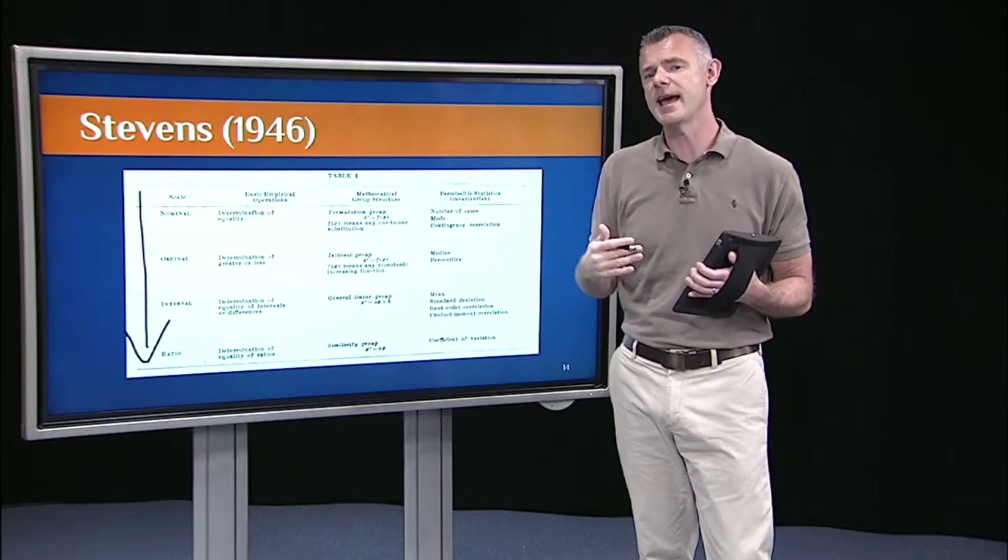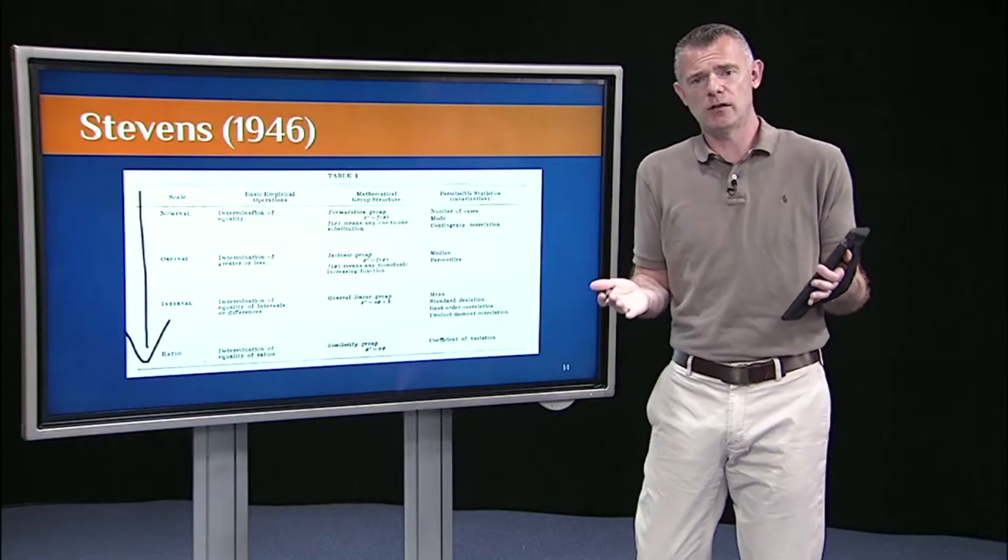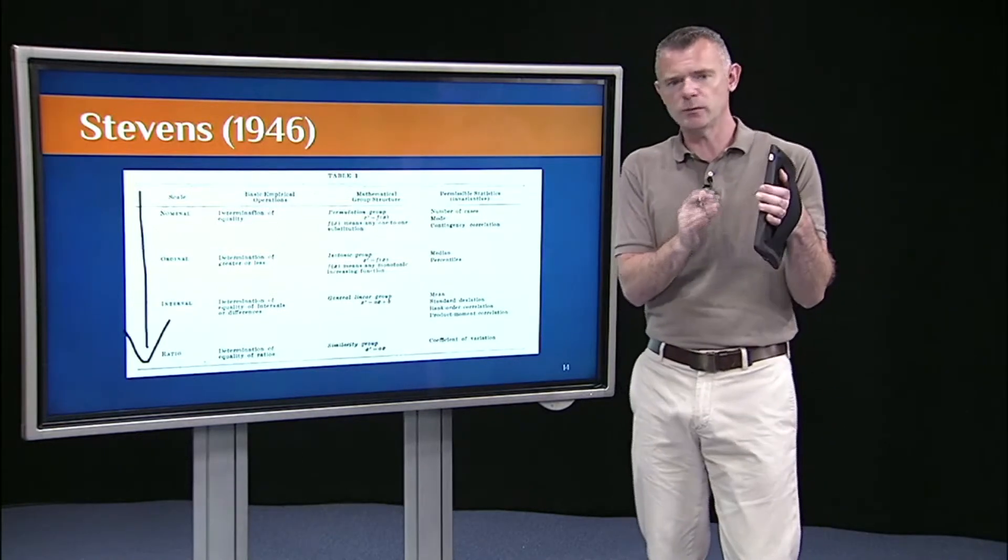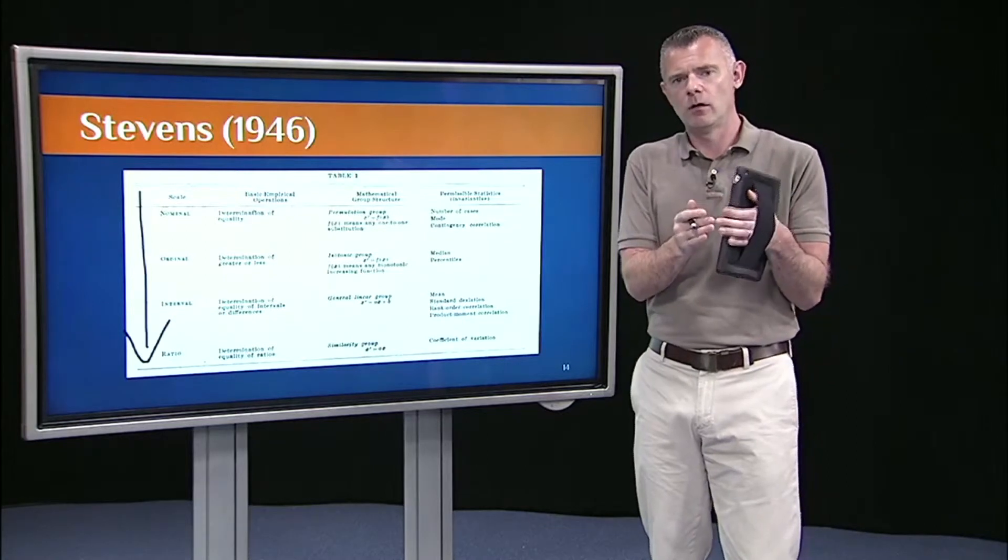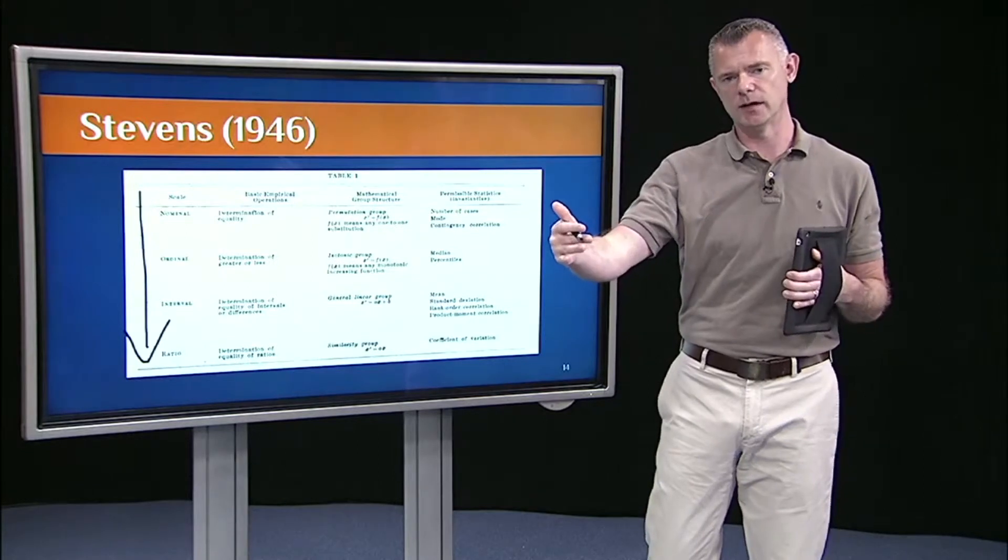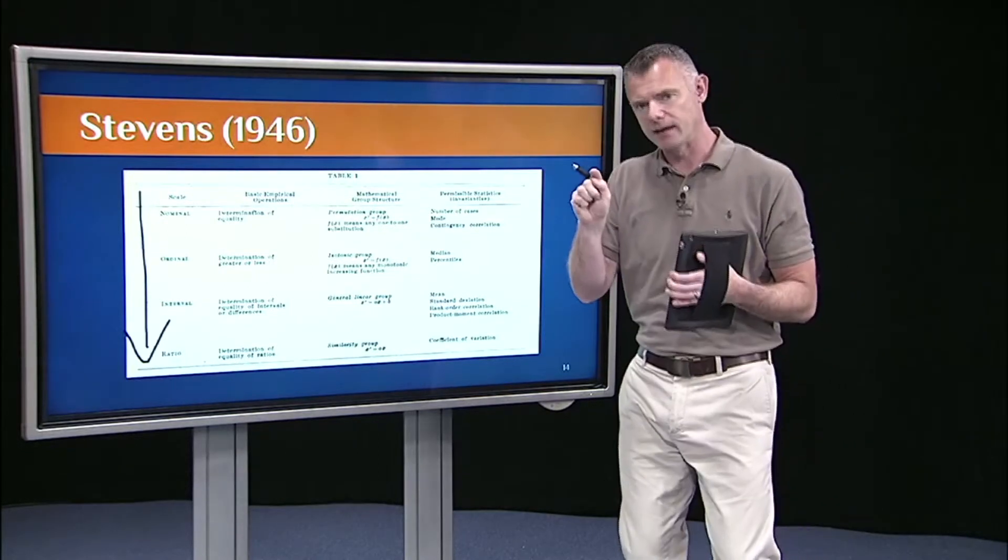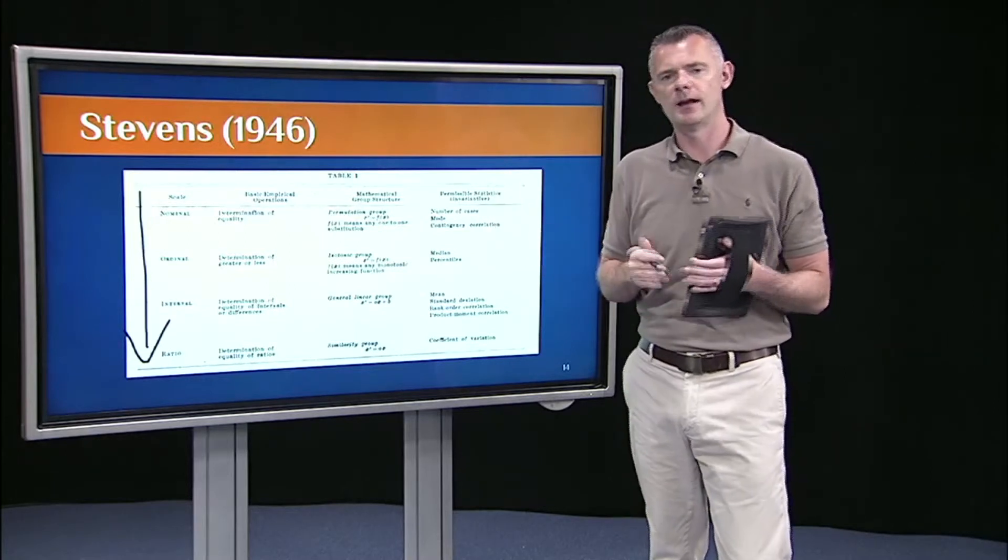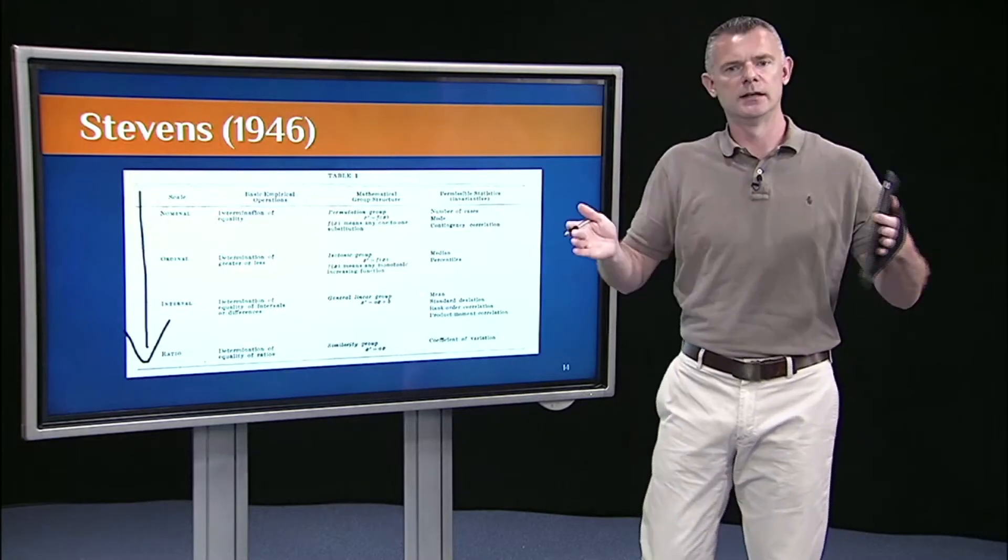If that's all I know, then I can't ask by how much did the winner win. Was it a really close race between first place and second, or was it just a blowout? The person who won was way ahead of the person in second. If all I know are the rankings, if all I know are the ordinal variable, then I can't answer that question about distance.